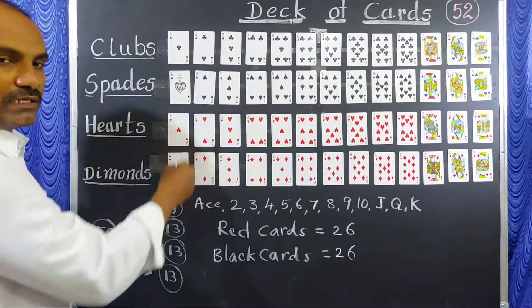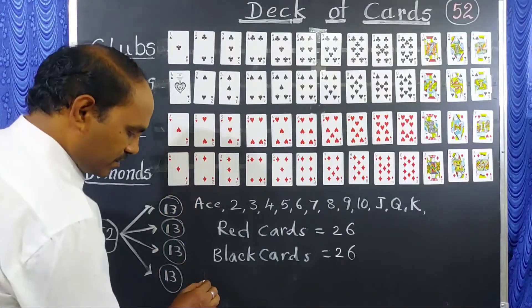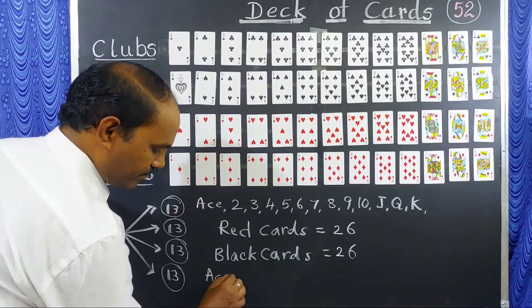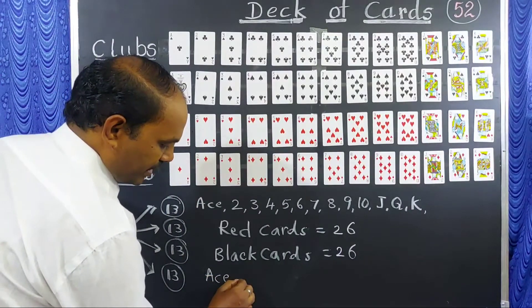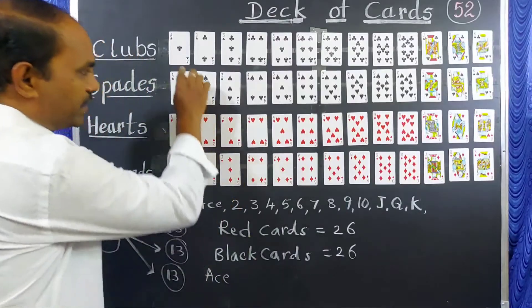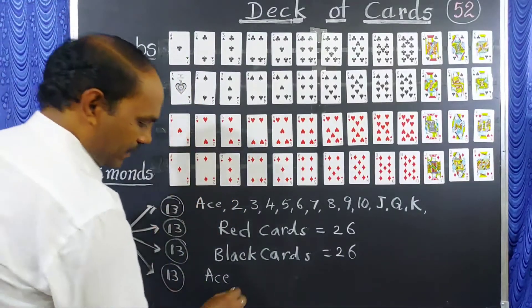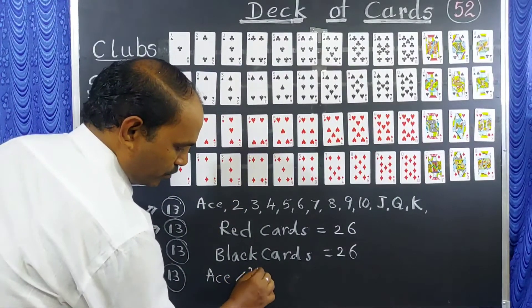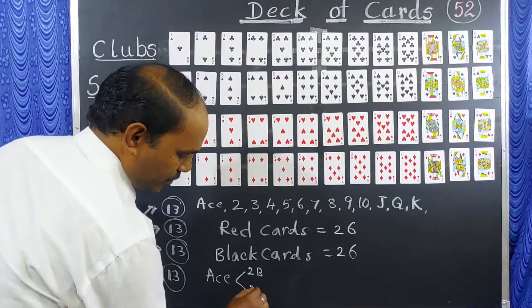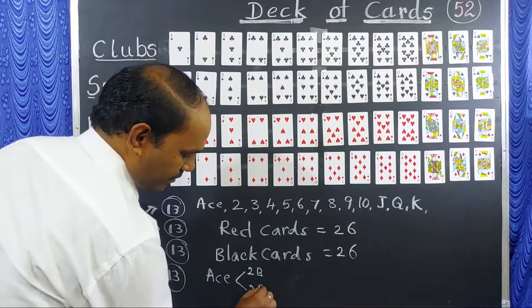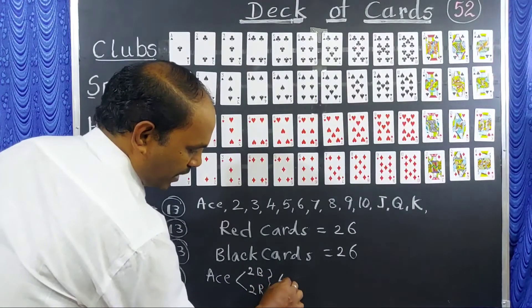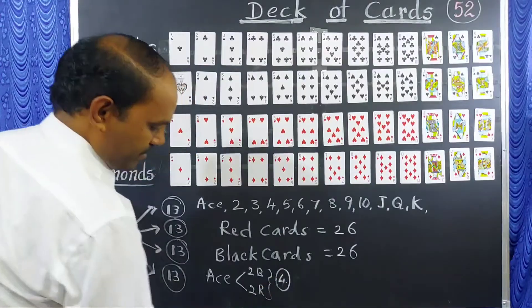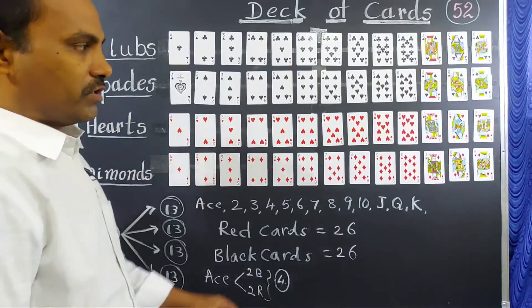Next, Aces — there are 4 Aces in total. In those 4 Aces, 2 are black and 2 are red — 2 black and 2 red, overall 4 Ace cards.